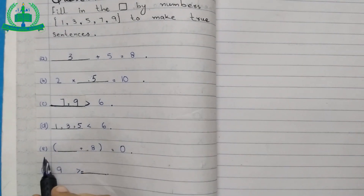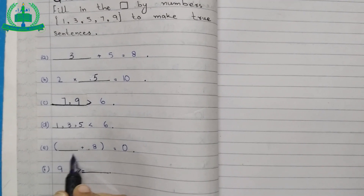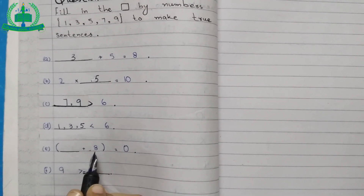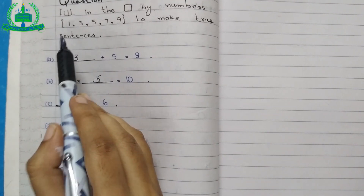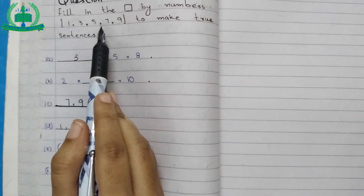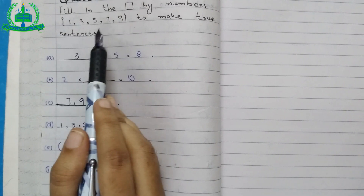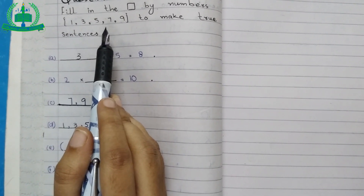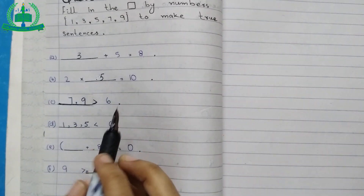E: (dash plus 8) equals 0. From the options 1, 3, 5, 7, 9, there is no number that satisfies the sum. So we mark a cross.